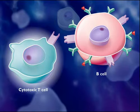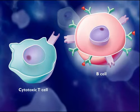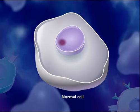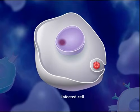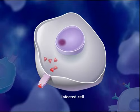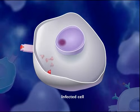one using cytotoxic T-cells and one using B-cells. Normal cells of the body that become infected can also digest some of the pathogens and display antigen fragments on their cell surfaces.